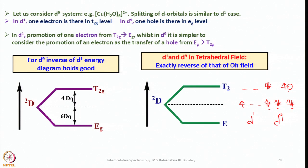That means for D⁹, the inverse of the D¹ energy diagram holds good. If you know the transition states in the D¹ system, just reversing it gives the D⁹ system for electron transitions. The same applies in tetrahedral: if it is D¹ with two electrons to t₂, then in D⁹ it becomes t₂e¹. By considering this, we are simplifying the interpretation and elucidation of structures using spectral data.